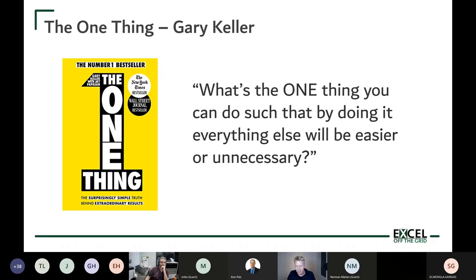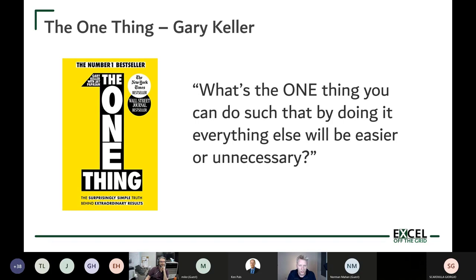There's a book by Gary Keller called 'The One Thing,' and he asks: what's the one thing you can do such that by doing it, everything else will be easier or unnecessary? Applied to Excel, the question becomes: why try to do something faster if you don't even need to do it to start with? Rather than being faster at doing something, let's try to automate it. I know about 10 or 15 shortcuts — my focus has always been on automation.